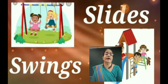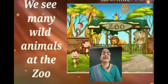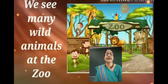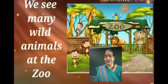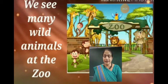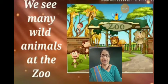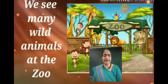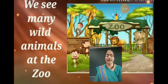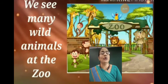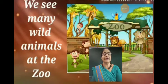In the park, there are slides and swings. Another outdoor recreation is going to the zoo. We see many wild animals at the zoo. It is a lot of fun to see and watch them. There are different types of wild animals in the zoo.